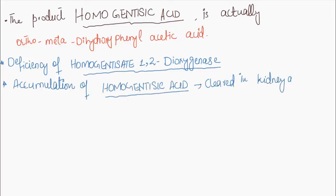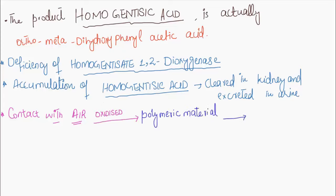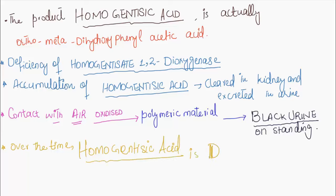It is rapidly cleared in the kidney and excreted in urine. Upon contact with air it oxidizes to form polymeric material which is responsible for the black color of standing urine. Over time, homogentisic acid is deposited in cartilages, sclera, joints, and heart walls.